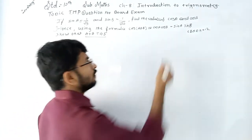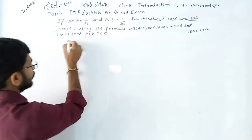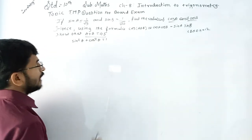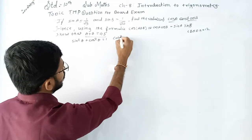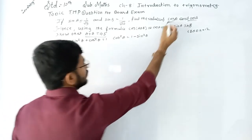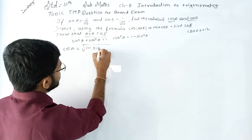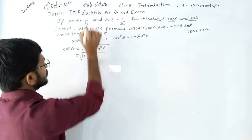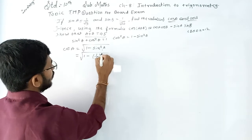First, you need to find the value of cos A and cos B. We will use the simple formula: sin²θ + cos²θ = 1. From this formula, we derive cos²θ = 1 − sin²θ. So cos A = √(1 − sin²A). The value of sin A is equal to 1 upon root 5, so sin²A = 1/5.